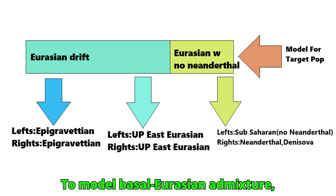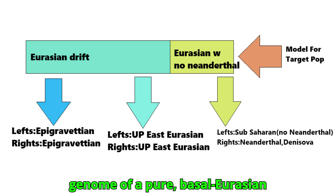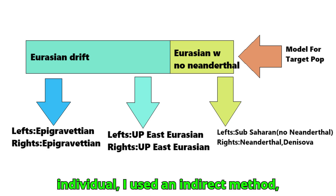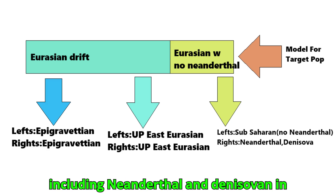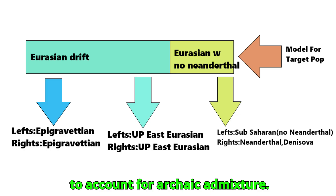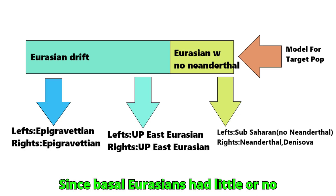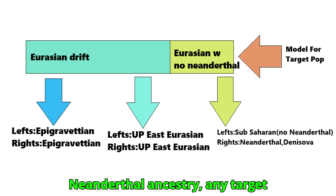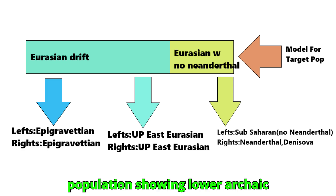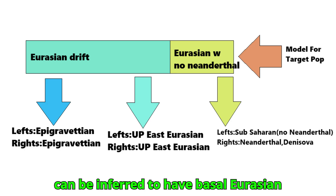To model Basal Eurasian admixture — especially since there is no direct genome of a pure Basal Eurasian individual — I used an indirect method. Including Neanderthal and Denisovan in the right populations (outgroups) allows CubeADM to account for archaic admixture. Since Basal Eurasians had little or no Neanderthal ancestry, any target population showing lower archaic affinity relative to other non-Africans can be inferred to have Basal Eurasian admixture.